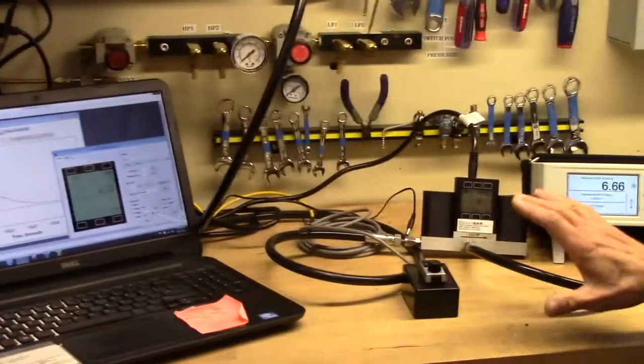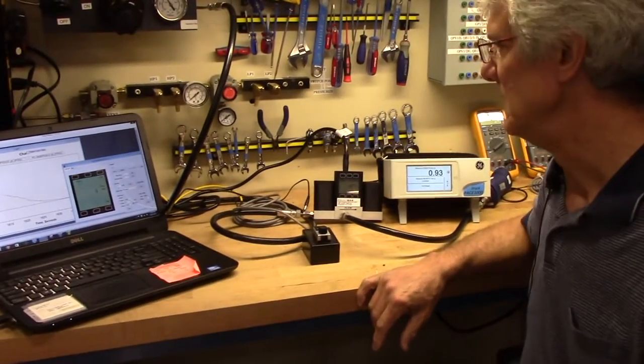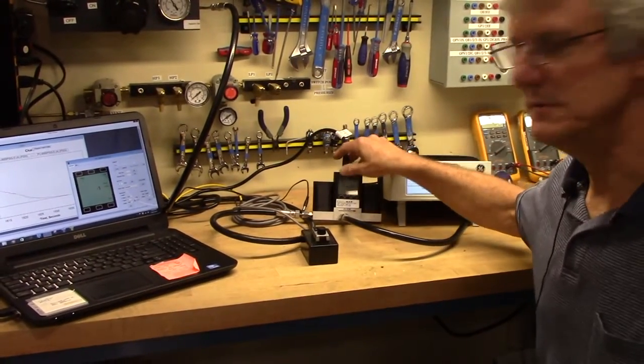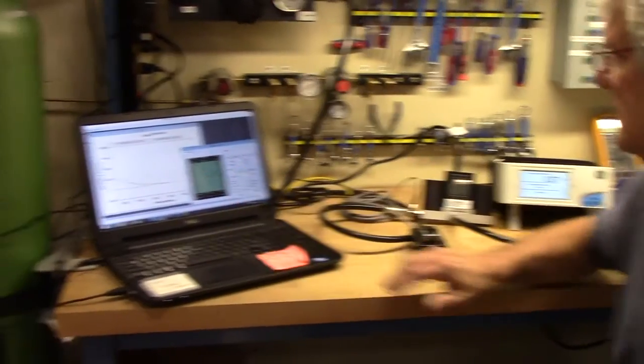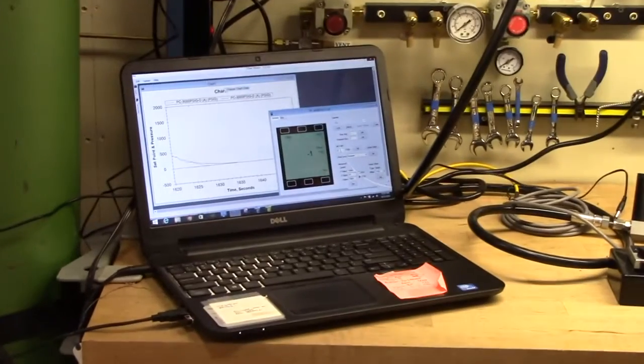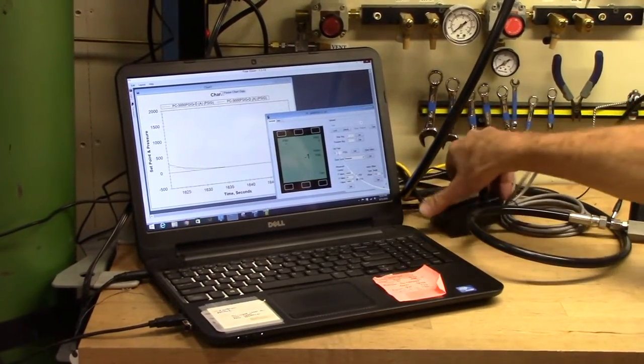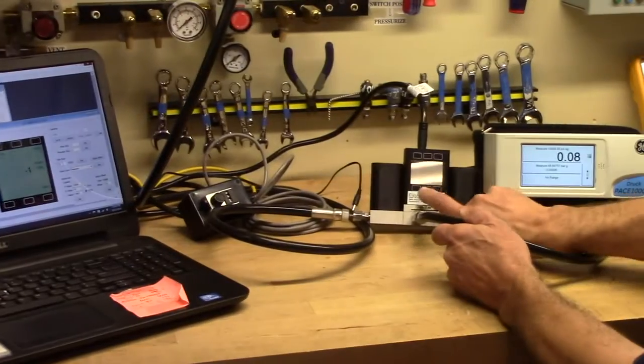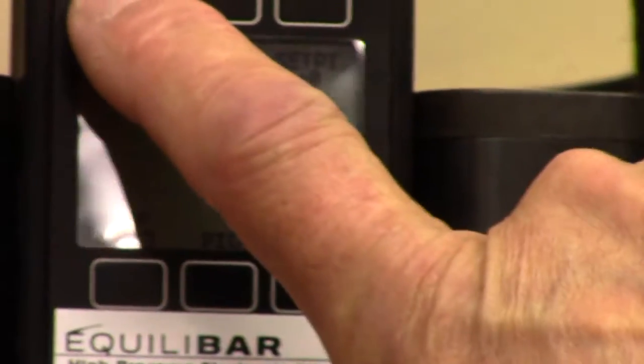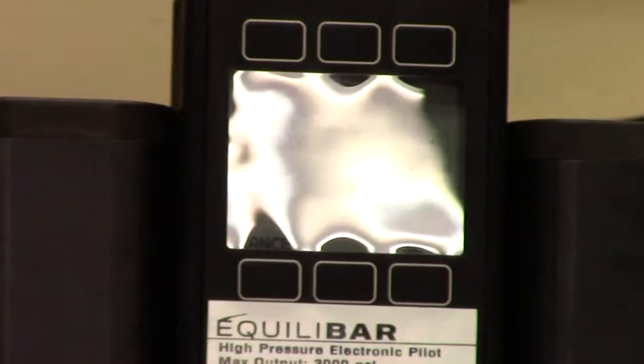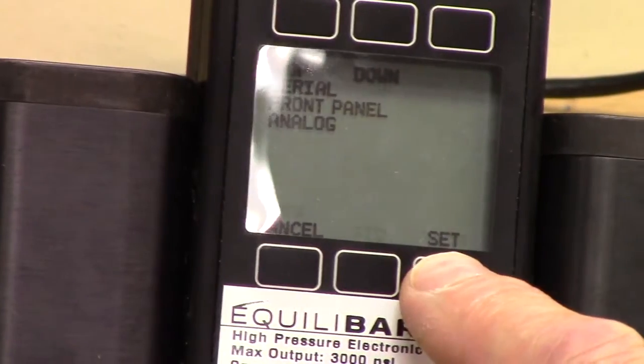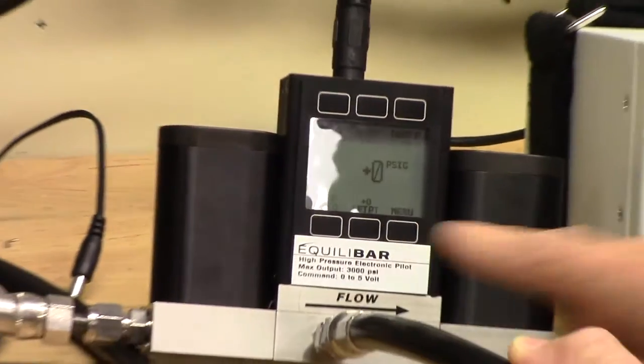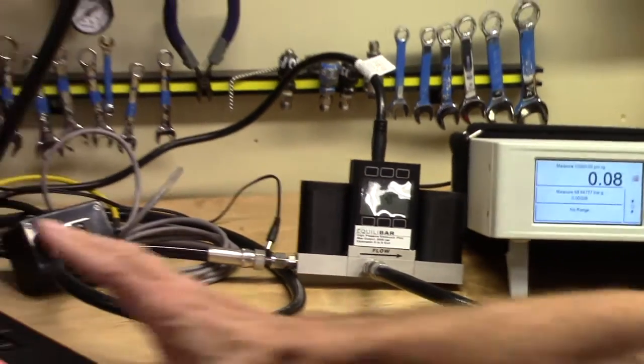Now a third method for controlling the EPR 3000 is through the RS232 port which is also on the mini DIN connector up here. We are using the FlowVision software. All I need to do is go and change the set point source. Go to menu, control setup, set point source and we're going to go to serial which is the top selection and we'll set. Now we're controlling the unit with the software.